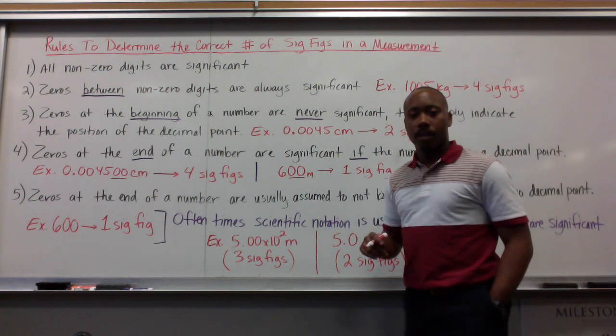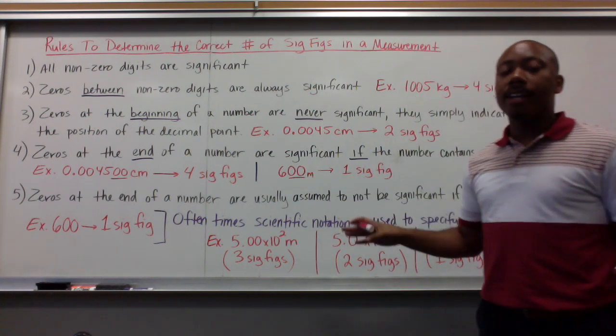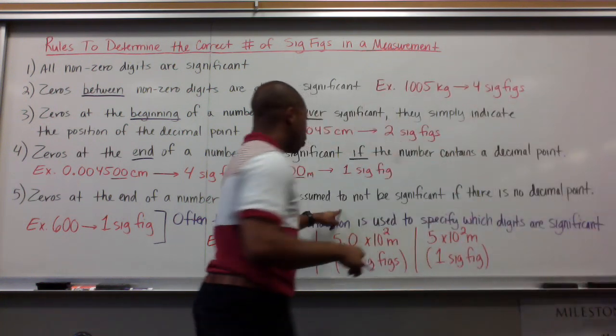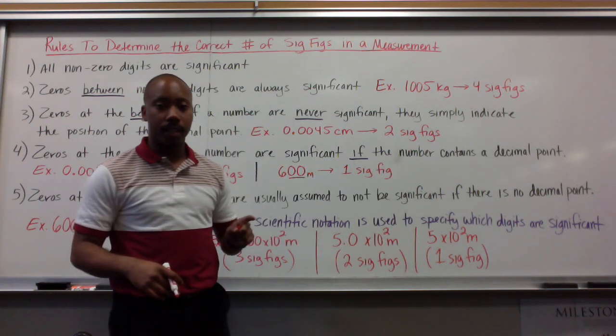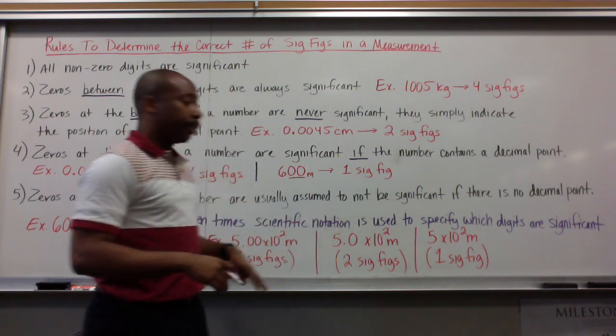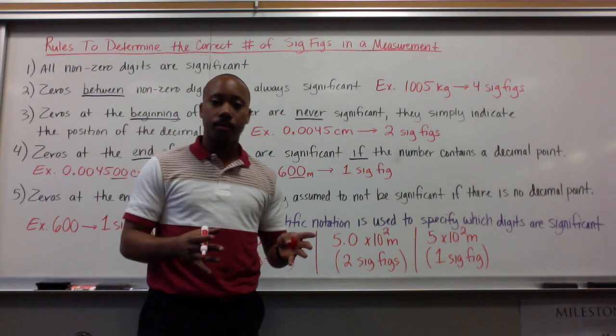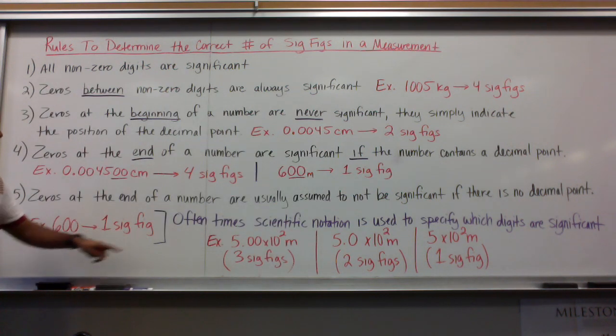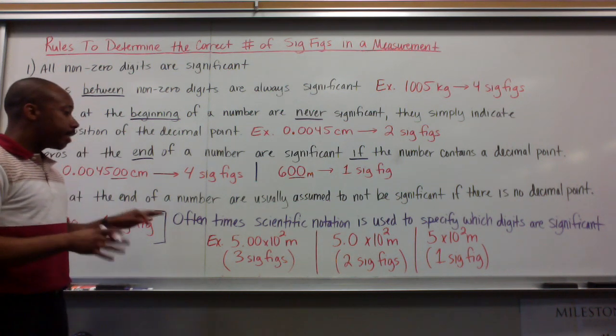Rule number five, kind of going along with this here. Zeros at the end of a number are usually assumed to not be significant if there is no decimal point, as I said up here. Zeros at the end are not assumed to be significant when there's no decimal point present. For example, 600, as we said, has one significant figure, no decimal point present at the beginning, thus, those zeros are not significant.